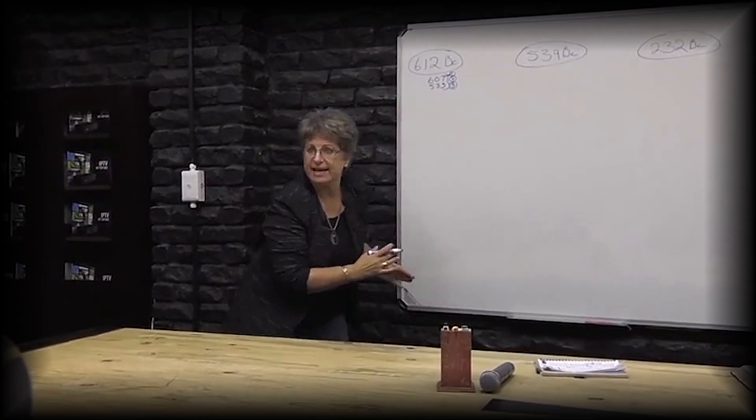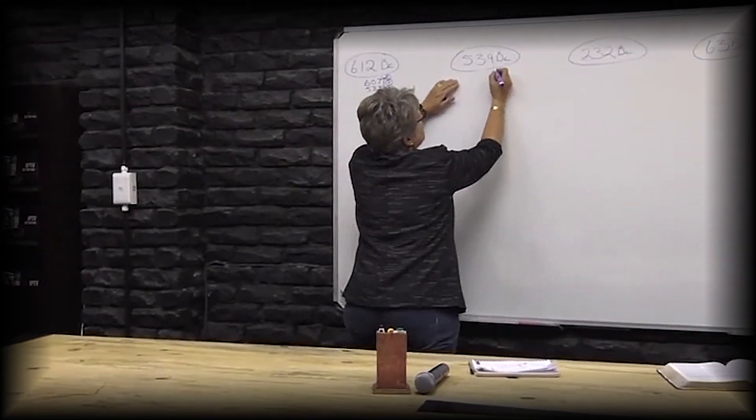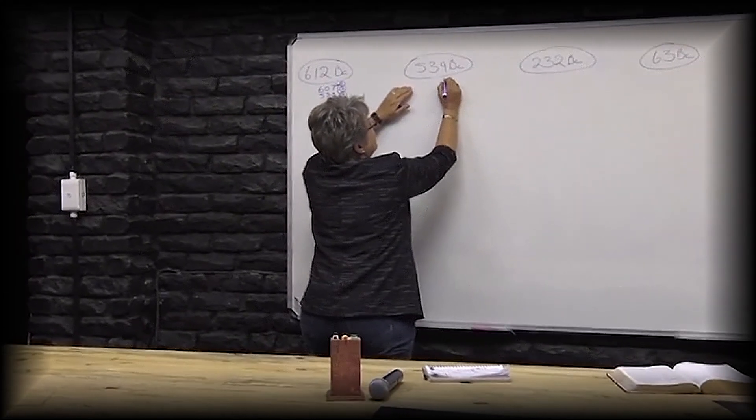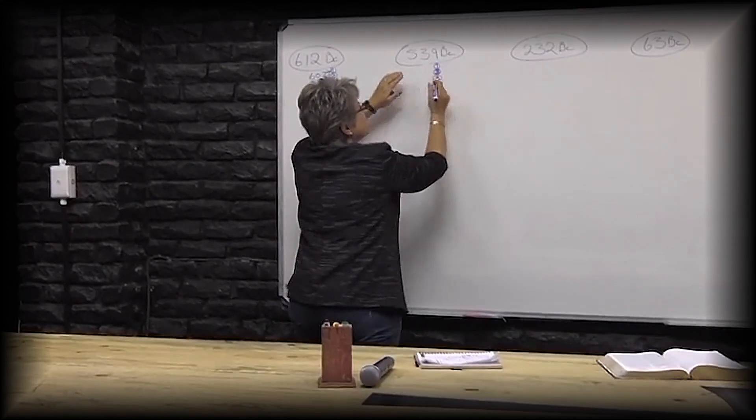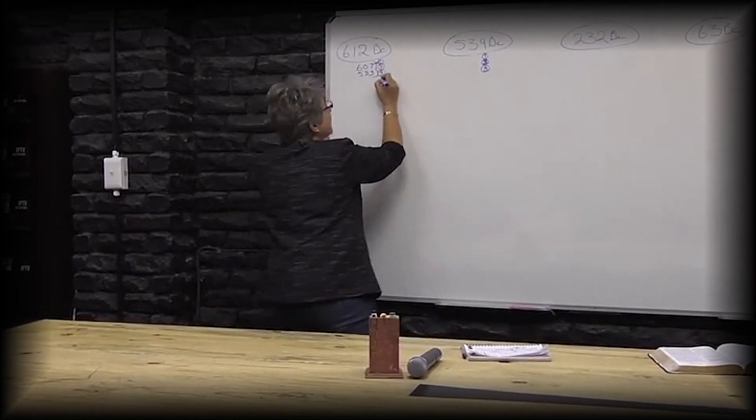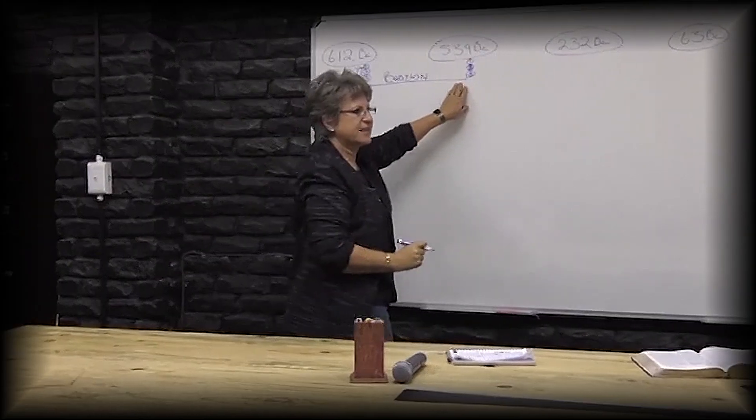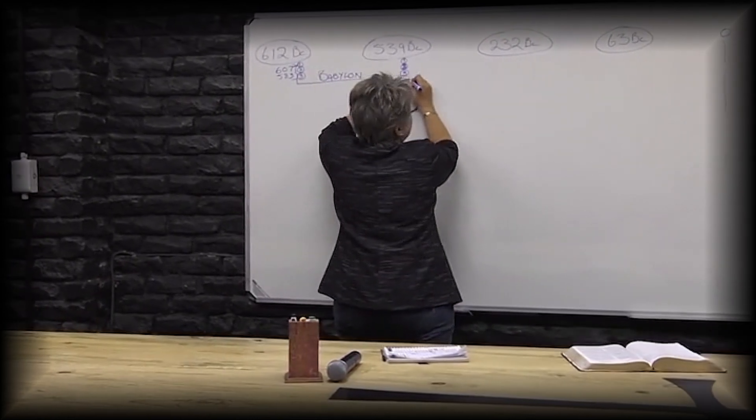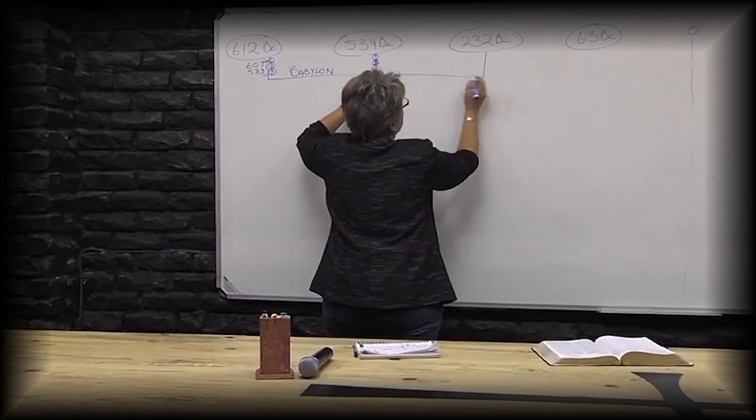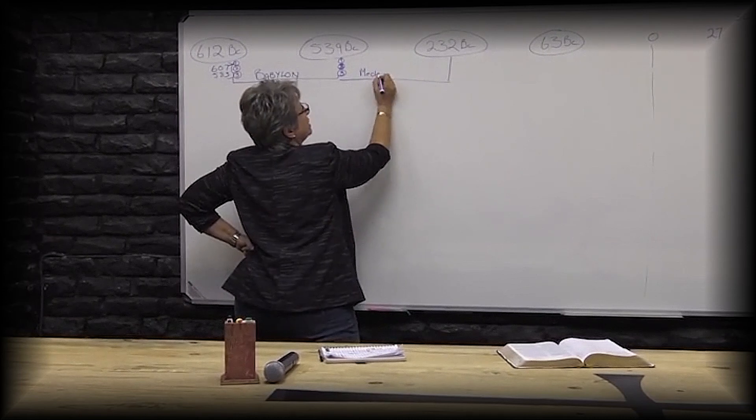When King Cyrus came in, there were three stages that they went back. More or less this is the time of Babylon. After Babylon came King Cyrus, Darius first and then Cyrus—there were four of them. From Babylon to 232 was the time of the Medes and Persians.